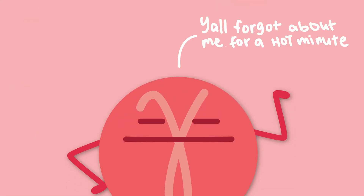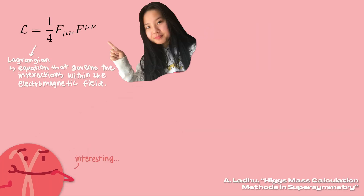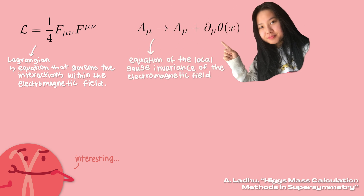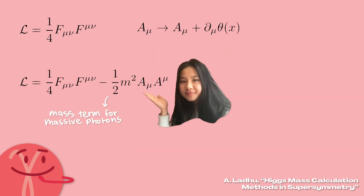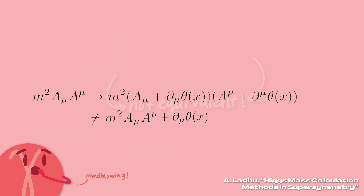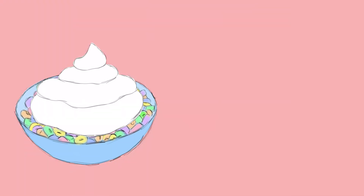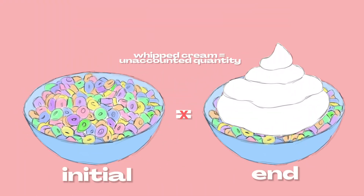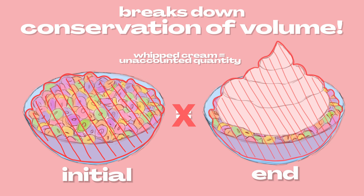Now, circling back to the photon. Without getting too deep into the math, this is a Lagrangian of the electromagnetic field, which obeys a U(1) symmetry written here — this equation essentially describes the local gauge invariance. When we add a mass term to the Lagrangian and factor it into the symmetry equation, we find that it does not equate with gauge invariance. This is analogous to our cereal bowl interpretation: having massive photons is like putting whipped cream into our bowl — it adds a whole other variable and groups of transformations that lead to the breakdown of the conservation of the total volume.